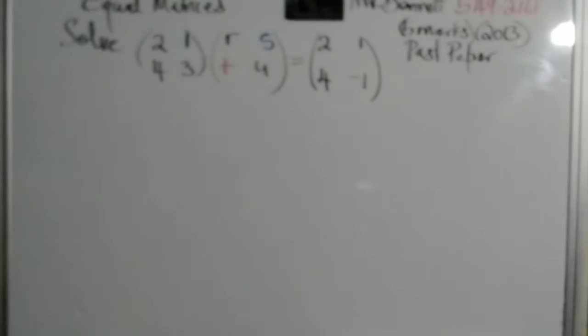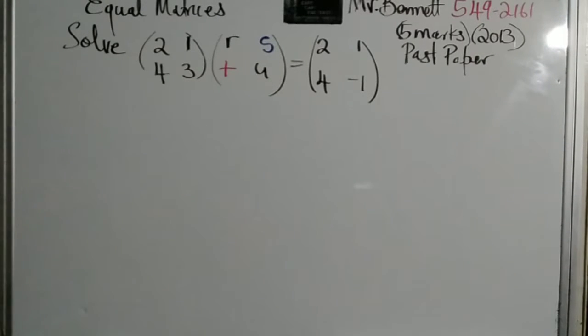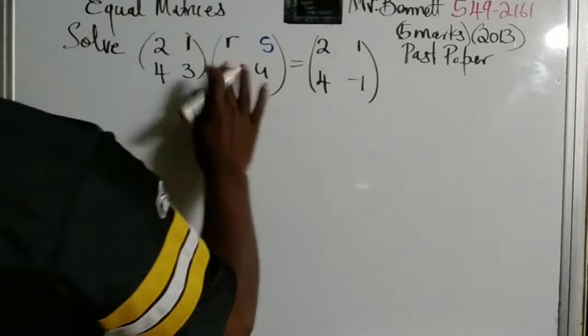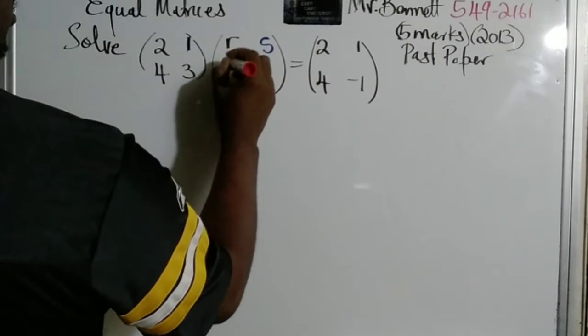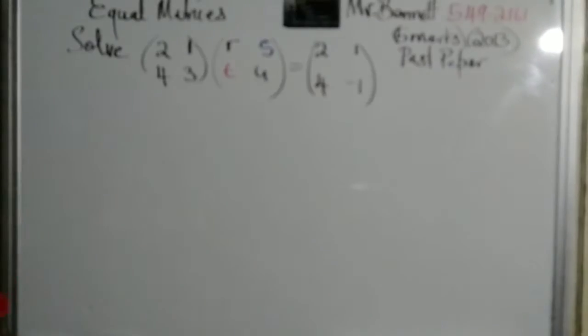All right guys, Mr. Bennett again and this is a past paper 2013 to be exact and it's a solve matrices problem. We have a 2 by 2 matrix multiplied by R, S and another by T, U. I'll write it better. Almost fooled me, it's a T. And we are supposed to find all four of these letters.